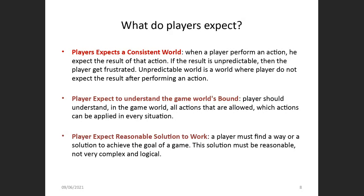For example, if you kill someone you expect to get points — if you don't, you're frustrated. Or if you fill all the objectives of a level but the level doesn't clear, you're frustrated. Players want a predictable world where every action has an expected result. An unpredictable world is one where players cannot anticipate results after performing an action.